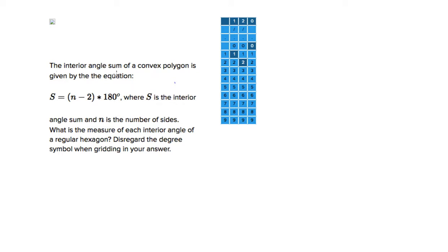This one gives us a formula for the interior angle sum of any convex polygon. We're told that the sum of the interior angles, S, equals n minus 2 times 180, where n is just the number of sides.